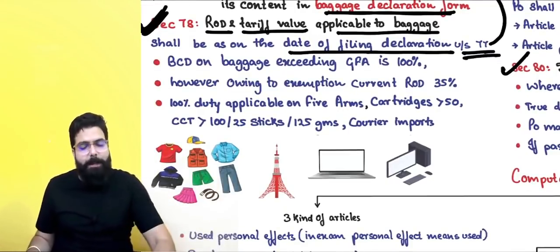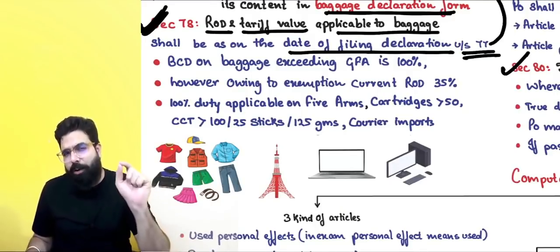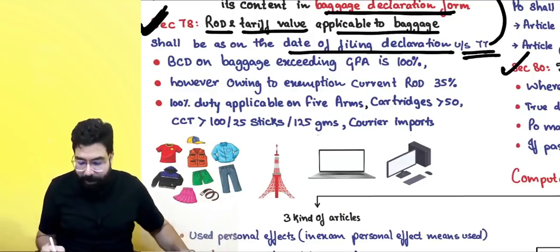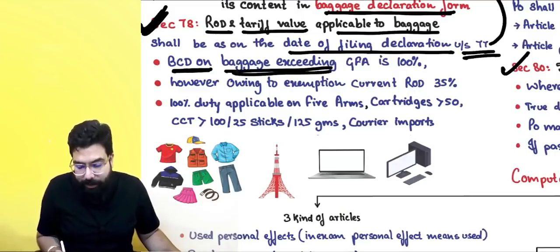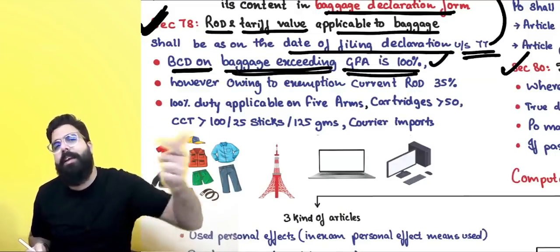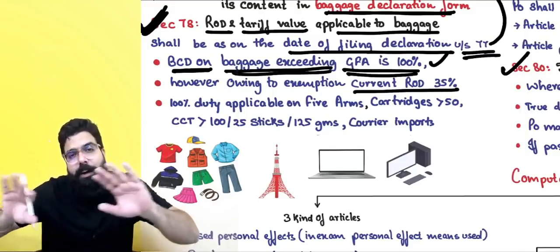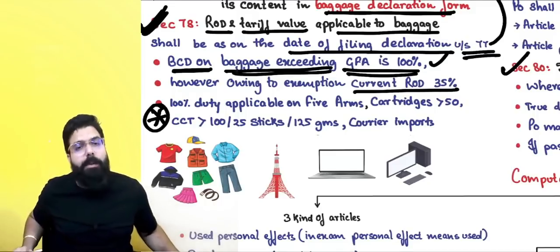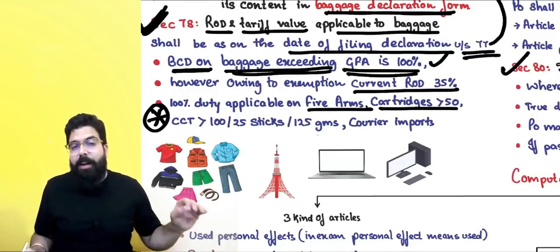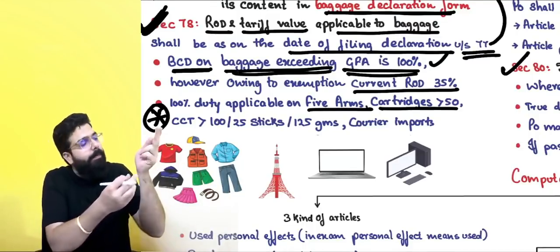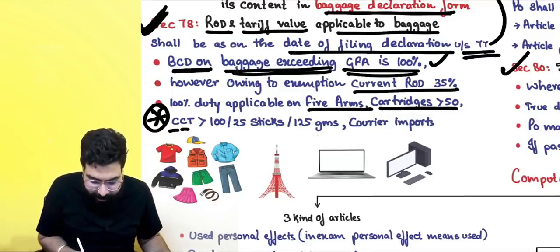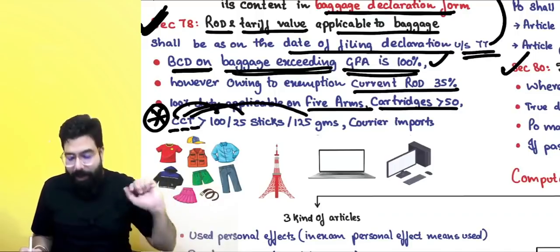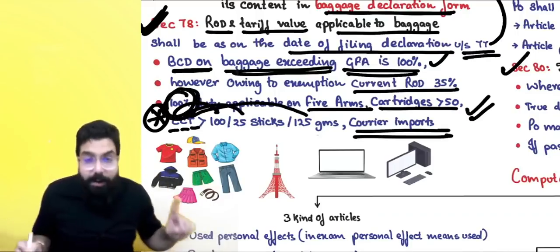Under heading 9803 of the customs tariff, basic customs duty on baggage exceeding the general free allowance is 100%, but an exemption of 65% applies, making the effective duty 35%. However, for firearms, cartridges exceeding 50, cigarettes exceeding 100, cigars exceeding 25, tobacco exceeding 125 grams, the rate is 100%. Courier imports are also always taxable at 100%.